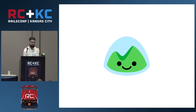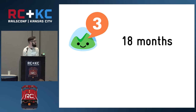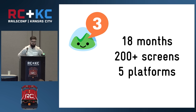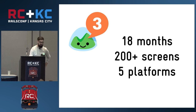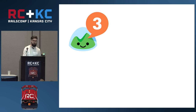I work for Basecamp. Last year we launched an all-new version called Basecamp 3. We created it in 18 months from initial concept through dozens of designs and iterations. It's a big app — over 200 screens — and we shipped it on five different platforms simultaneously: desktop web browser, mobile web browser, an Android native client, an iOS native client, and email. And we did all this with a tiny team: six Rails developers, two Android developers, and two iOS developers.